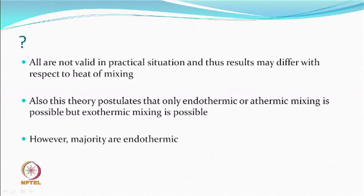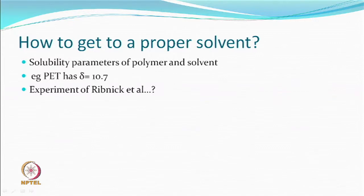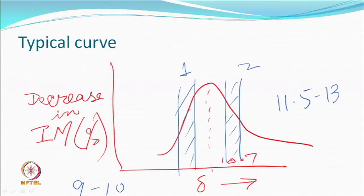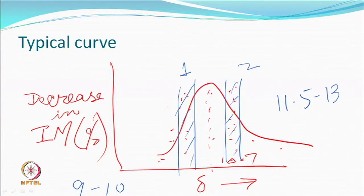It is also a fact that the majority of polymer-solvent interactions are actually endothermic, so to some extent you may get results which are acceptable. One interesting result is that polyester has a solubility parameter of about 10.7. Ribnick and co-workers had extensive work on trying to find out which solvents would work and which would not, based on the solubility parameter. They took many solvents, some having solubility parameter near 10.7 and many others spread on both sides.